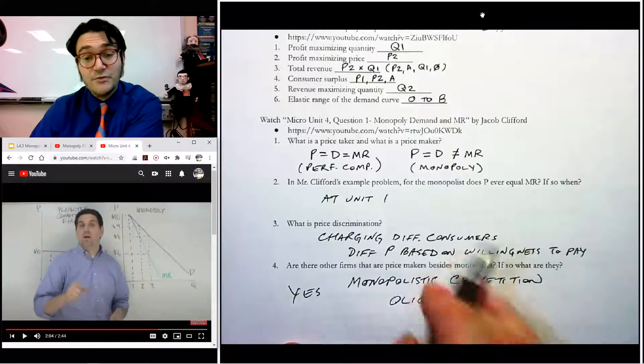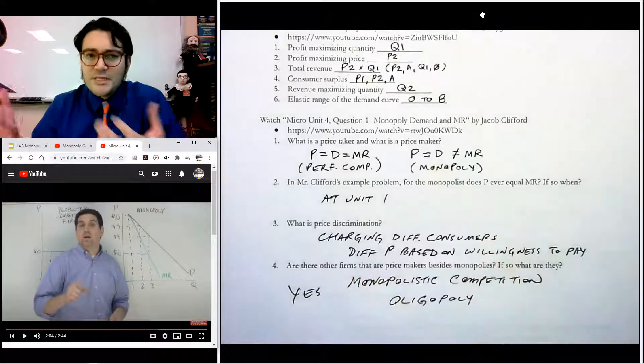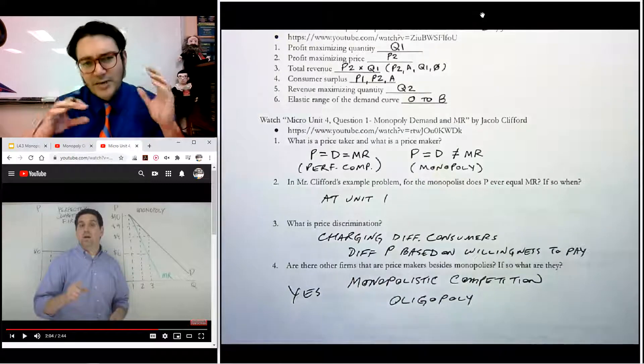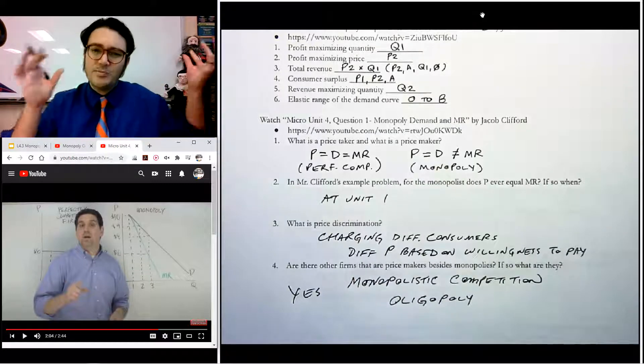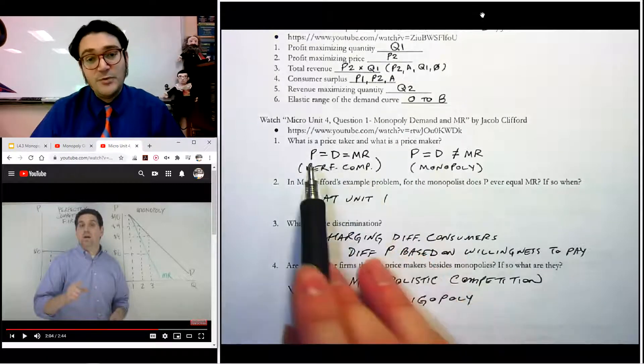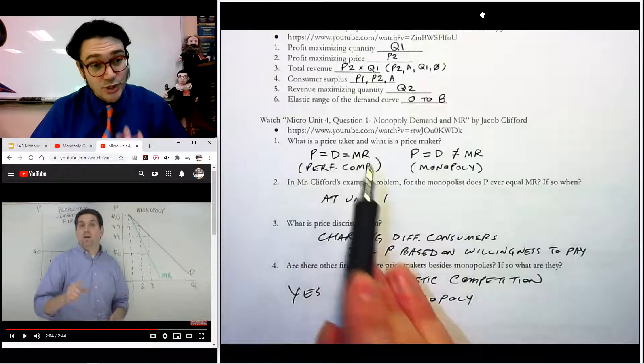So hopefully you watched his video and you kind of know the difference now between a price taker and a price maker. A price maker is one that can make the price, they can set their own price depending on where they'd like to, but the price taker has to take the market price. So the only price taker is a perfectly competitive firm where the price is on the demand curve, and that also equals marginal revenue. We had MR = D = AR = P.